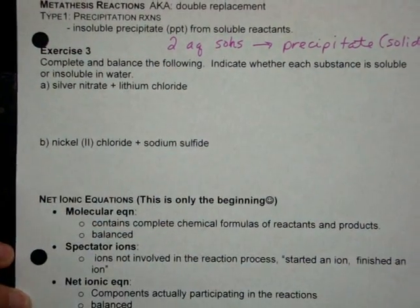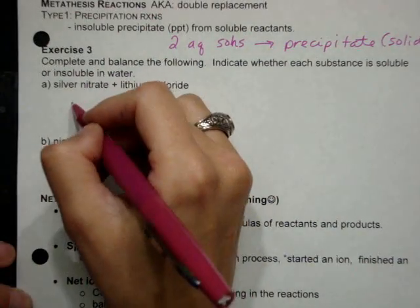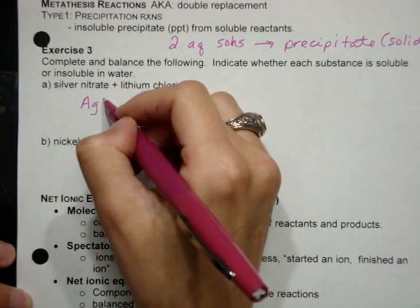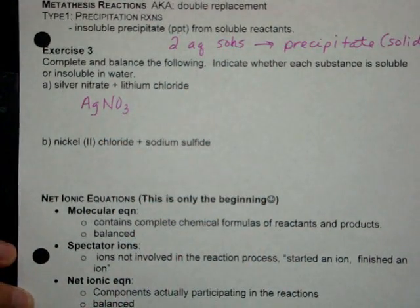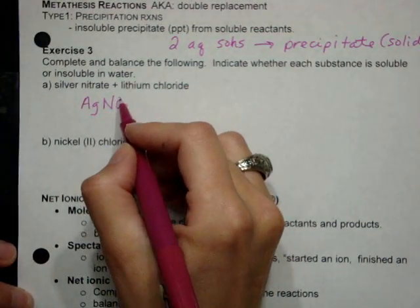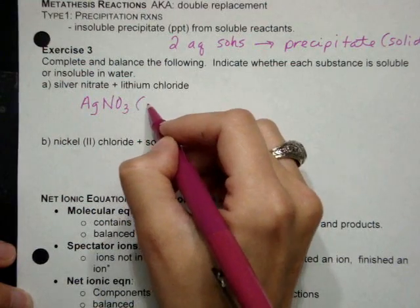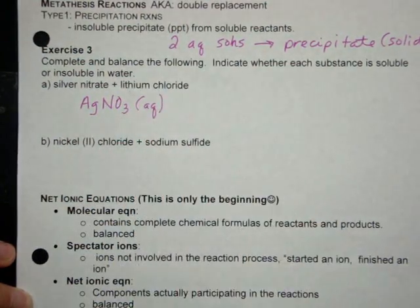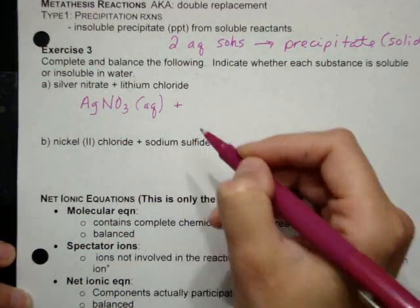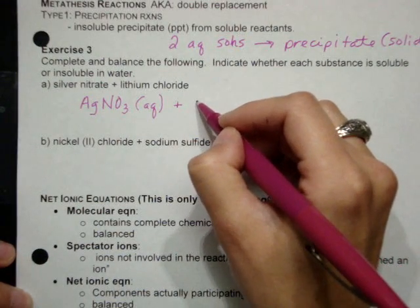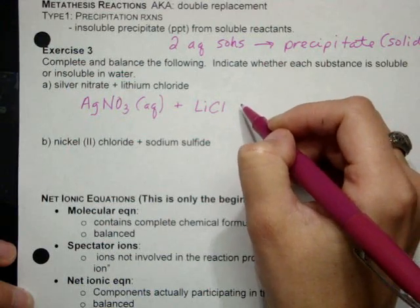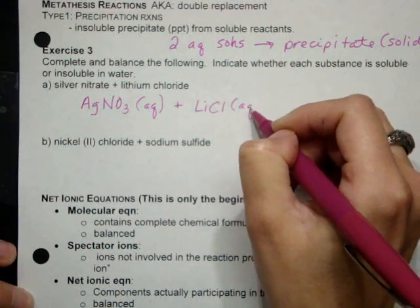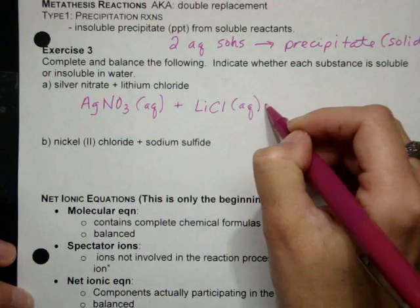So if we take a look at exercise three, the first one we have silver nitrate, AgNO3. Silver is always a plus one, nitrate is always a minus one, so that's a good equation. We can assume that these are going to be aqueous unless we're told otherwise. And then we also have lithium chloride. Lithium is a plus one, chloride is a minus one, and it is also aqueous unless we're told otherwise.